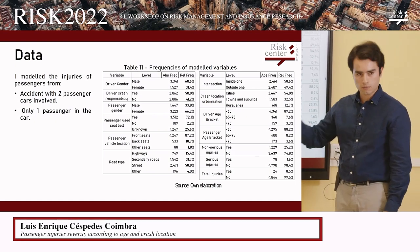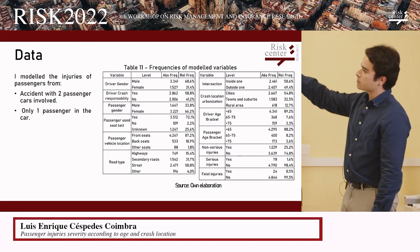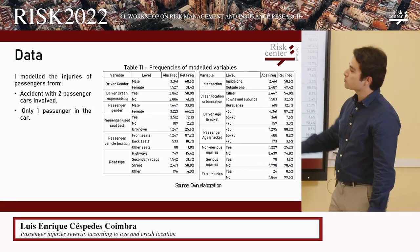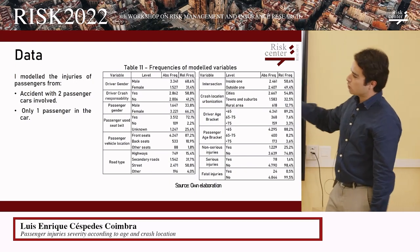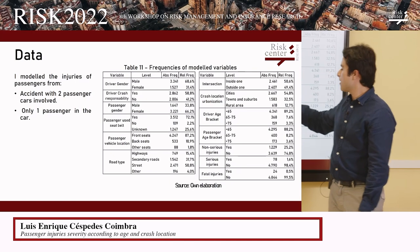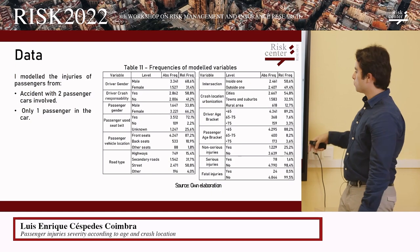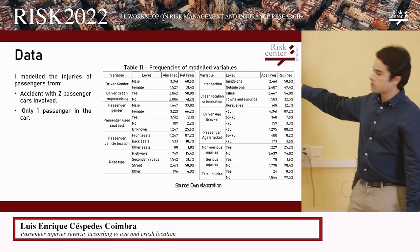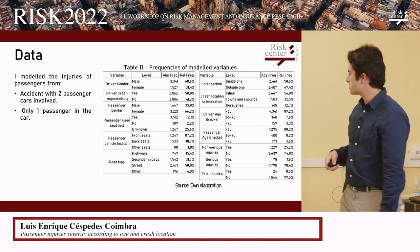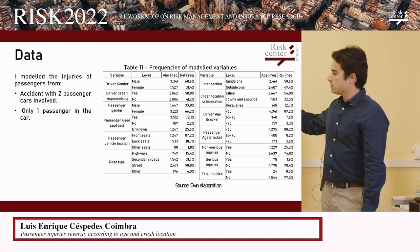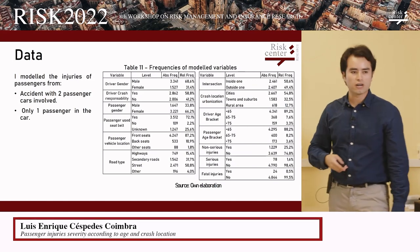For the descriptives, our drivers are mostly male, mostly responsible for their accidents, and overwhelmingly below 65 years old. Passengers are mostly female and also below 65. Over half of the accidents took place in cities, a third in towns and suburbs, and 12% in rural areas. When it comes to injuries, 25% suffered non-serious injuries, 1.6% serious injuries, and 0.5% were dead.